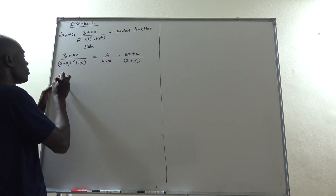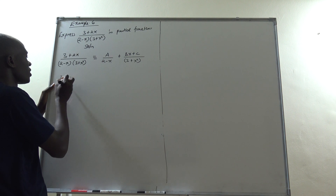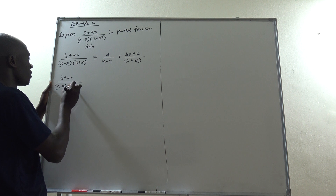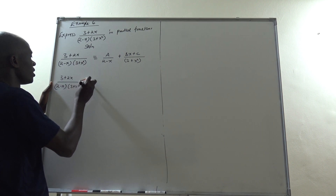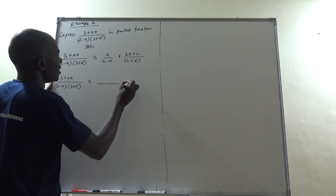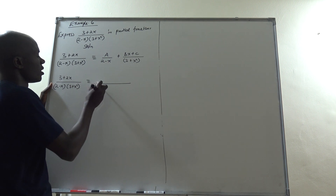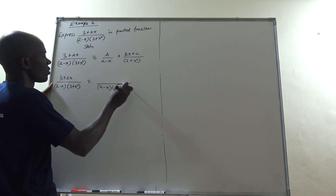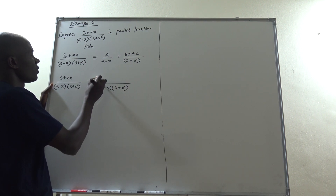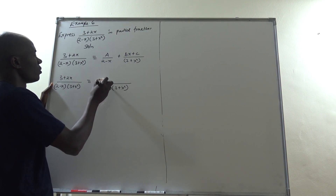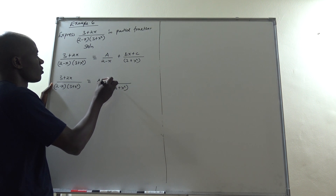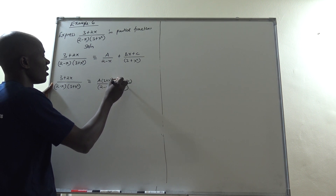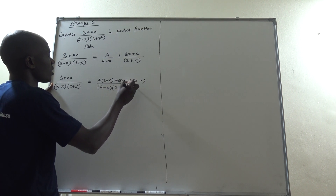So we write (3 + 2x) / [(2 − x)(3 + x²)] with the LCM (2 − x)(3 + x²) as the common denominator. The numerator becomes A(3 + x²) + (Bx + C)(2 − x).